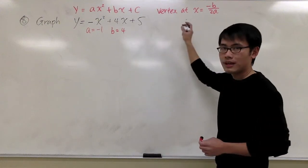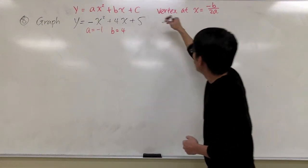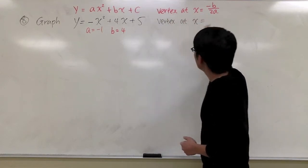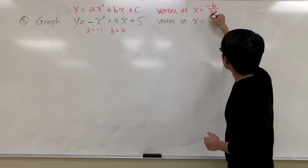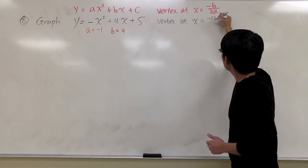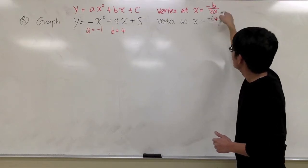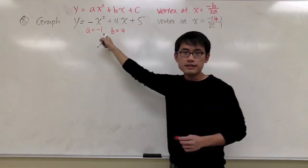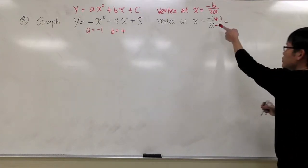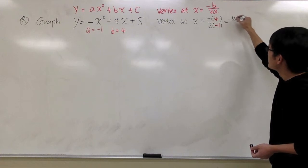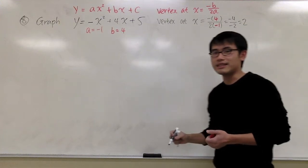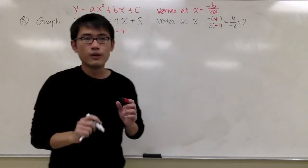Then I can use this formula to find the vertex. The vertex is at x equals negative b over 2a. My b is equal to 4, so I have negative 4 on top over 2 times a, where a is negative 1. That gives us negative 4 over negative 2, which equals 2. That's the x value for the vertex.